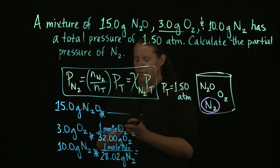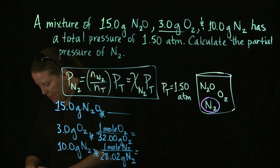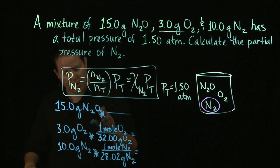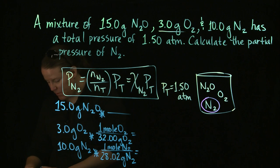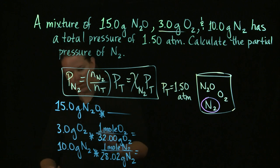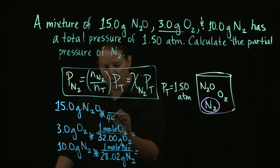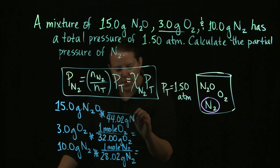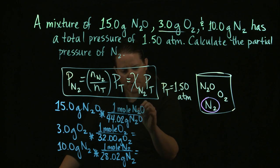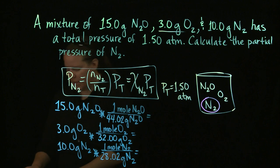For N2O, I don't know that one off the top of my head. So 28.02 because we know N2 is 28.02 plus 16 because there's only one O. That's 44.02 grams of N2O for one mole of N2O. Alright, let's calculate all of these out.